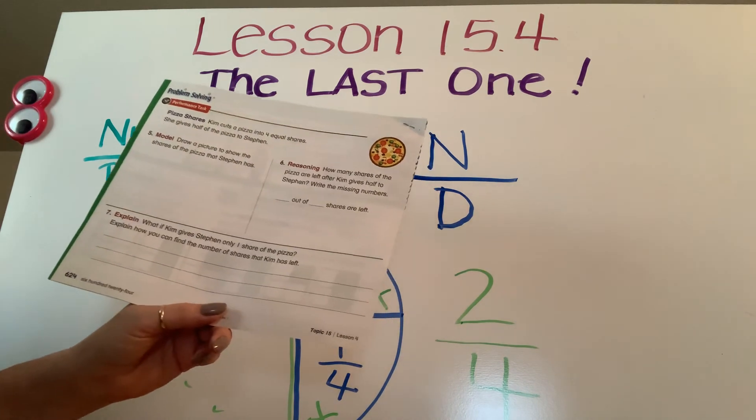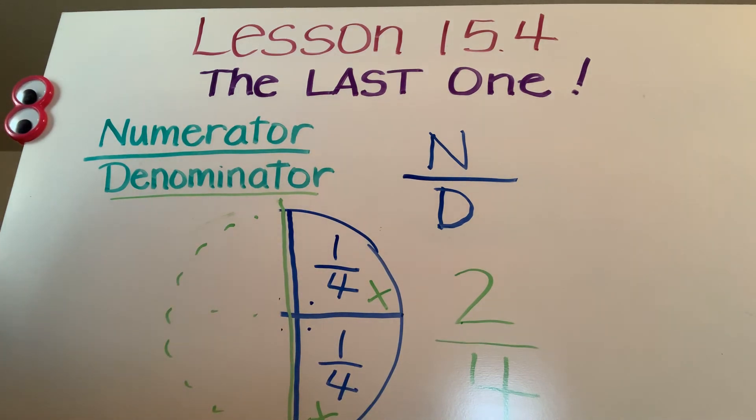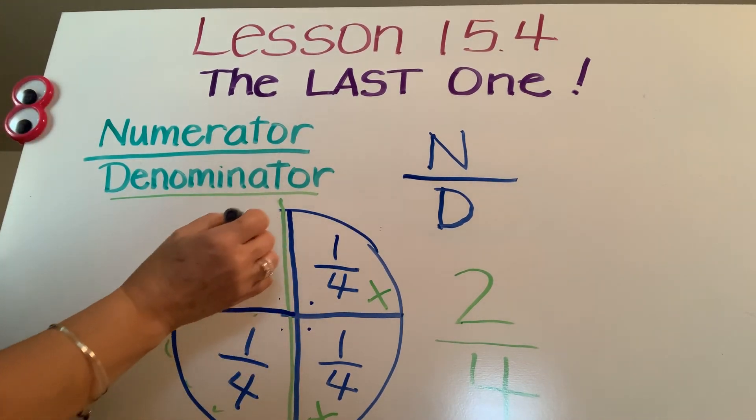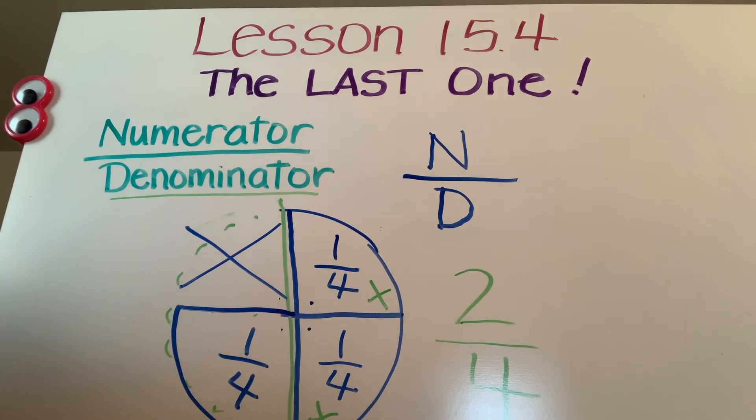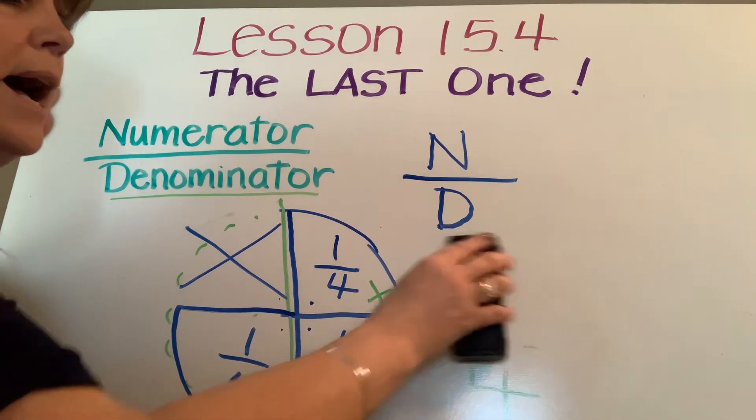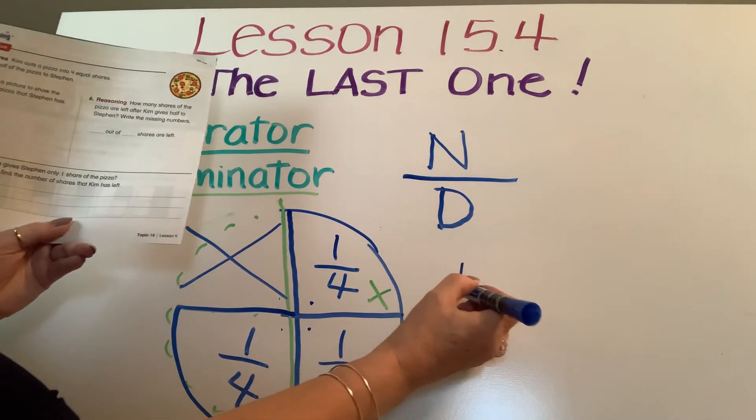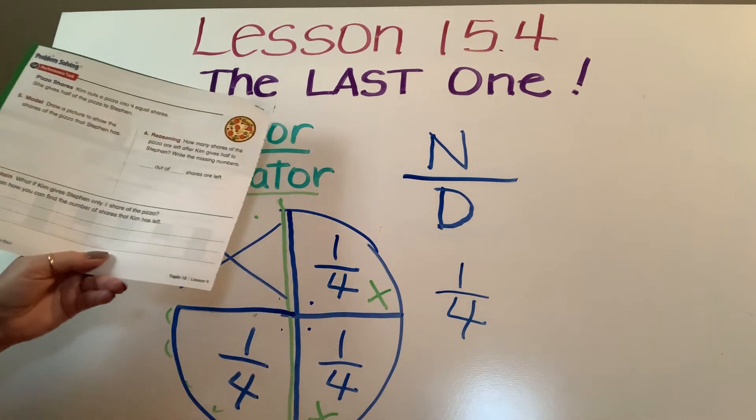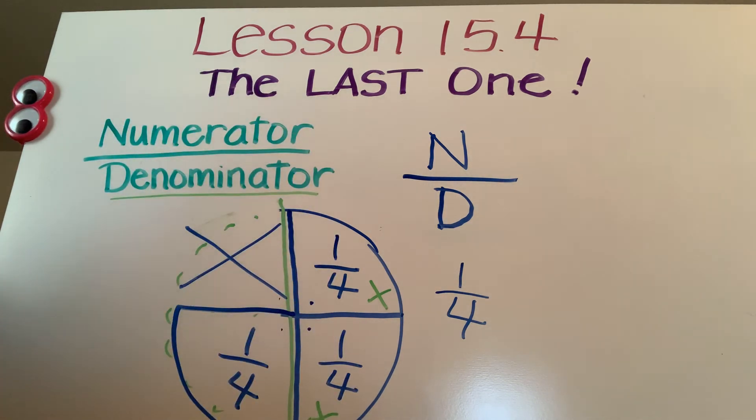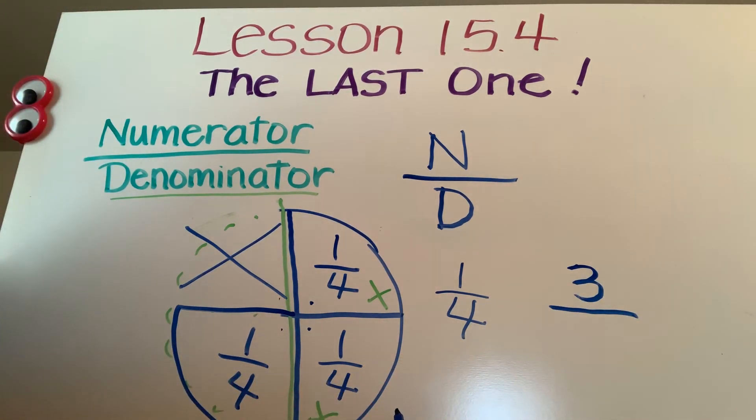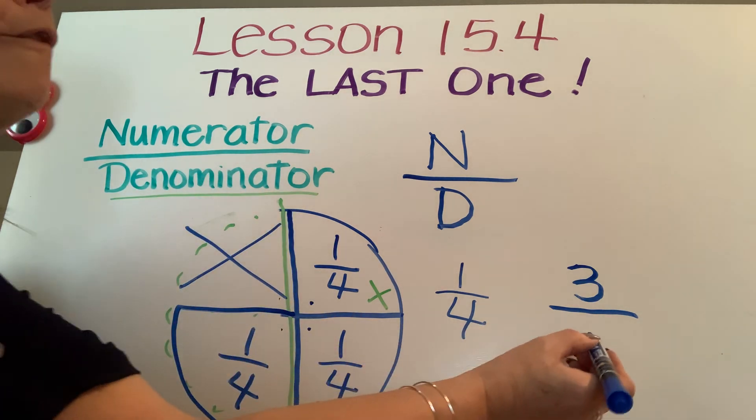What if Kim only gave Steven one part of the pizza? So let's draw that part back in. And Steven took this part. Steven already ate that. How much did Steven eat? He ate one fourth. Good job. Oh, I love that. I heard a lot of kids calling out that answer. Jersey, you are on the ball today. So if Steven only got one fourth, how much did he leave Kim? Well, guess what? We're going to count again. One, two, three. Kim was left with three pieces out of Isaiah. How many pieces were there in that pizza? There were four. Good job.